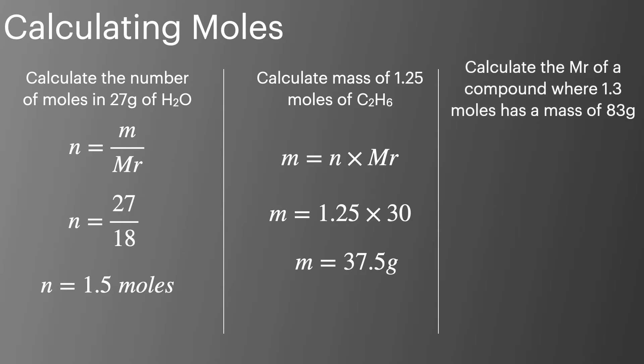In our third example, we're going to calculate the Mr of a compound where 1.3 moles has a mass of 83 grams. To do this we'll use the equation Mr equals m over n. We'll substitute in our numbers of 83 and 1.3 to arrive at an Mr value of 64.